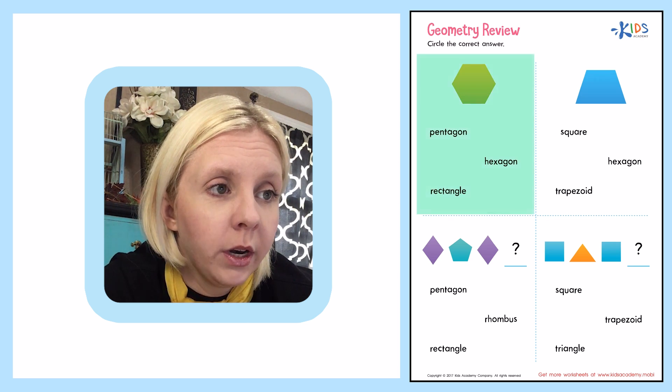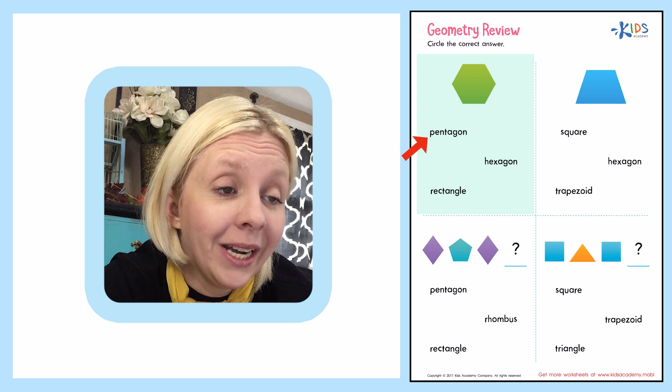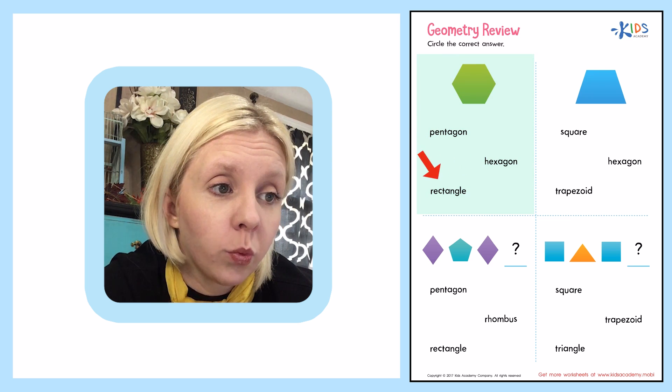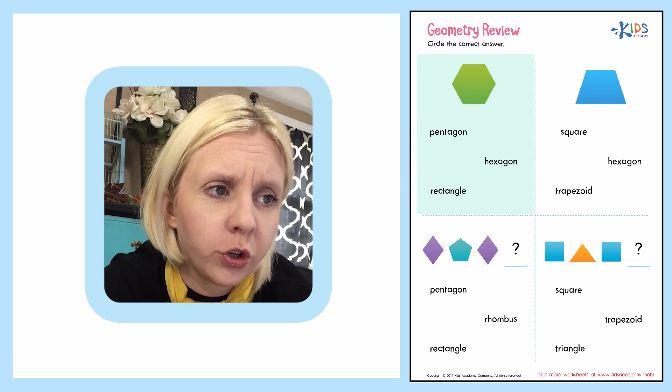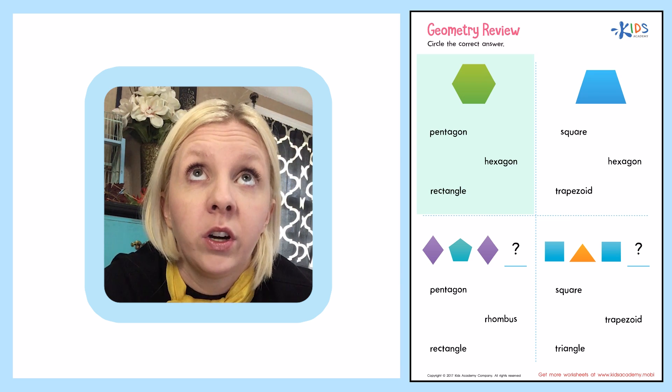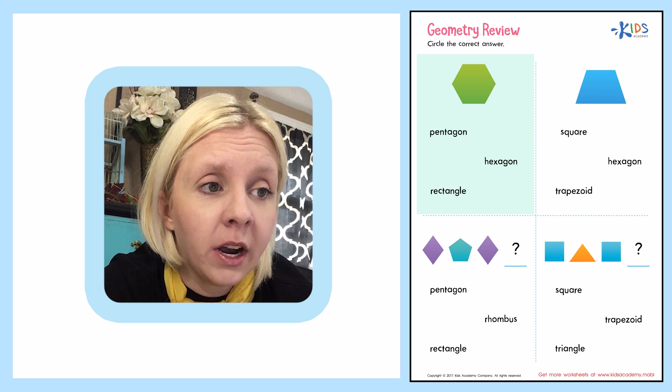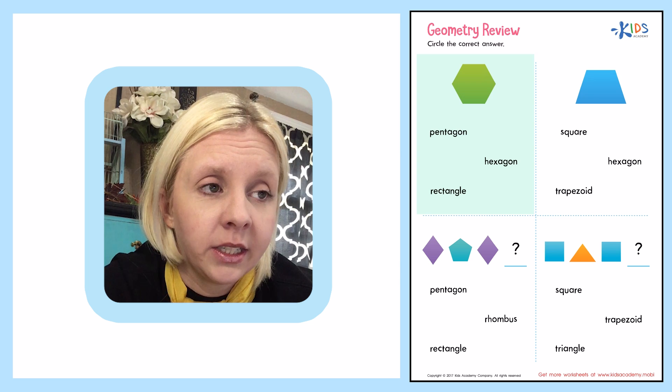Let's look here at this first one. It's wanting to know, is it a pentagon, a hexagon, or a rectangle? Well, I know it's not a rectangle for sure, but I can't really remember. Let's think for a second. A pentagon has five sides and a hexagon has six.